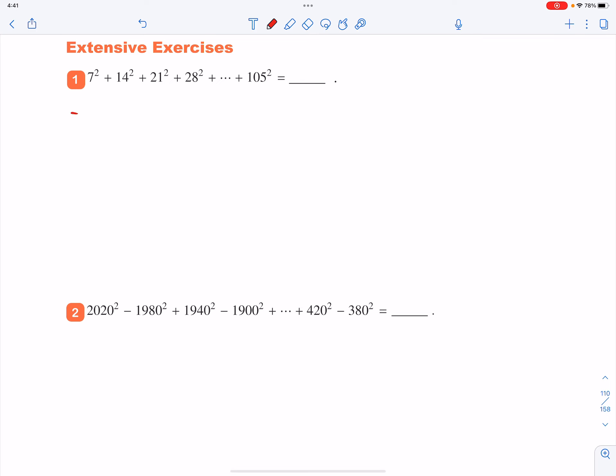For example, as for the first term, if you extract this 7 squared out, you have 1 squared left. And as for 14 squared, basically that equals to 7 squared times 2 squared.